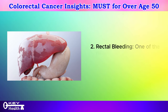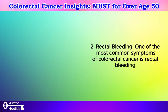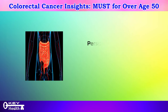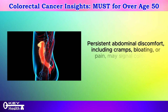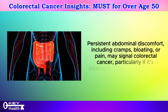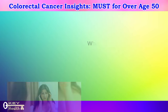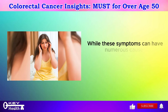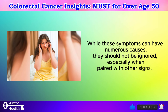Symptom 2: Rectal bleeding. One of the most common symptoms of colorectal cancer is rectal bleeding. Symptom 3: Abdominal discomfort. Persistent abdominal discomfort — including cramps, bloating, or pain — may signal colorectal cancer, particularly if it is localized or worsens over time. While these symptoms can have numerous causes, they should not be ignored, especially when paired with other signs.